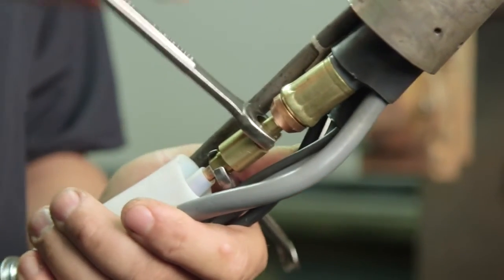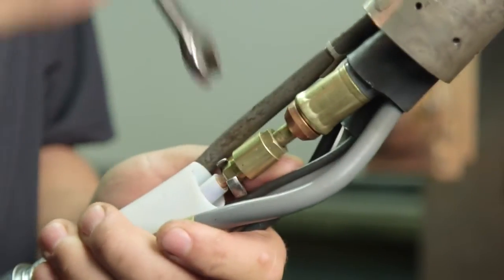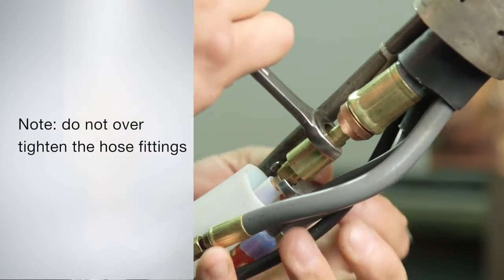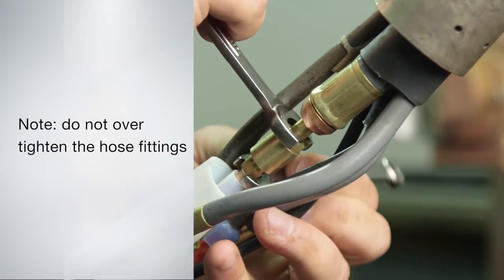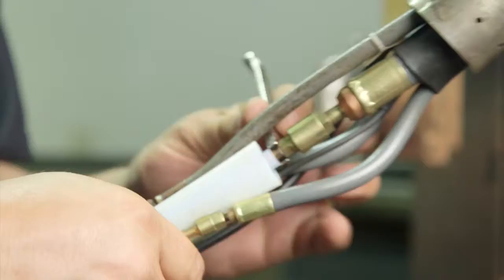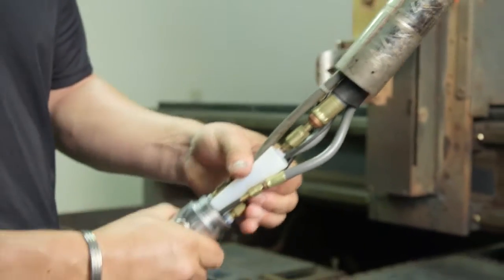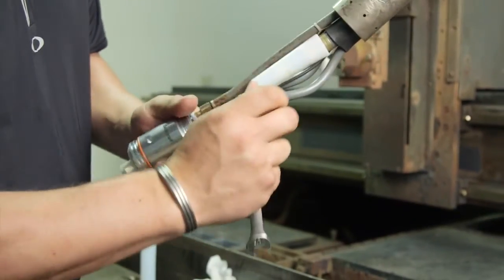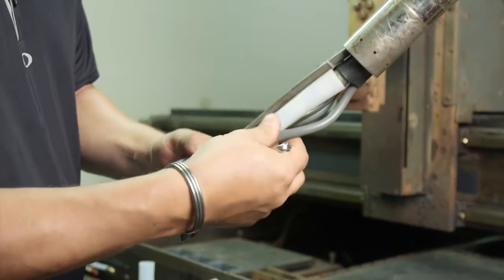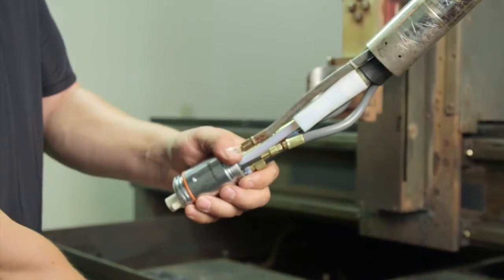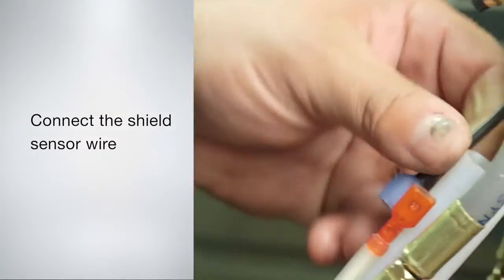Tighten each hose connection snugly using two wrenches. Do not over tighten the hose connections and do not allow the fittings on the torch to twist as this can cause damage to the torch inlet tubes. Slide the insulating material on the coolant in lead up over the exposed brass fitting. Connect the shield sensor wire.